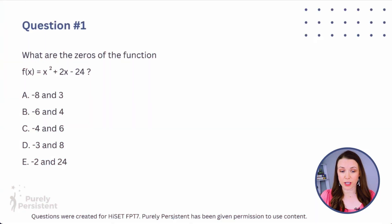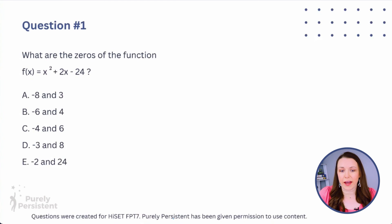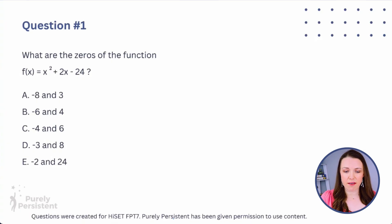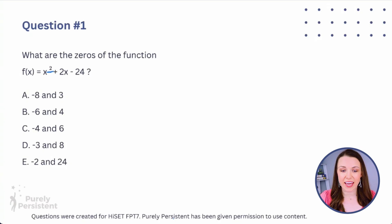Question one: what are the zeros of the function? We have f(x) — anytime you see f(x), it's really just like y. So f(x) = x² + 2x - 24. We have x squared, which means we're dealing with a quadratic. There are actually two different ways we can solve this, and I'm going to teach you both. One may be a little easier for some people, and one requires a bit more work.